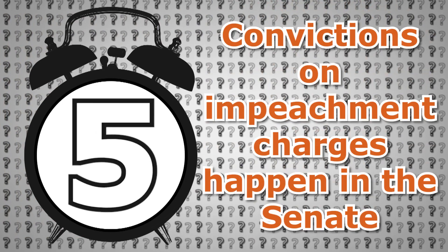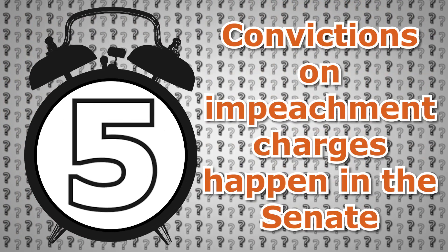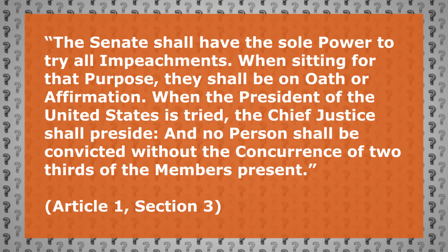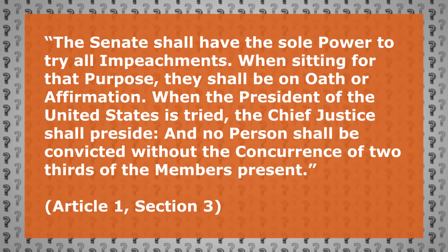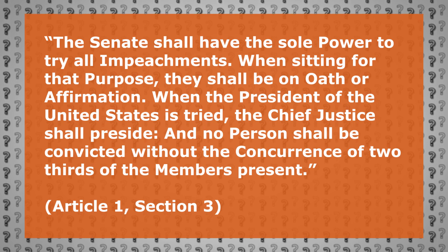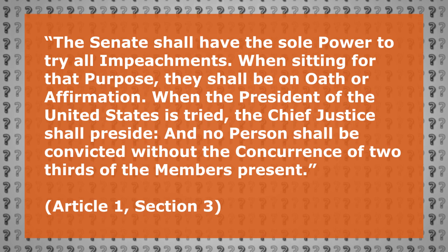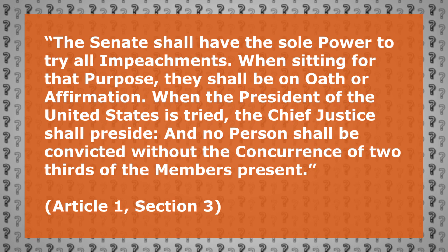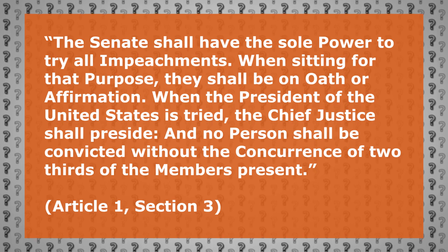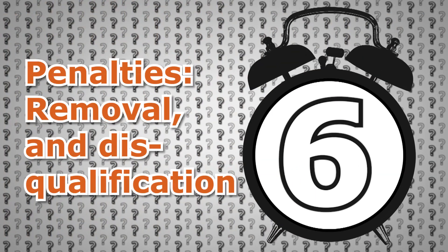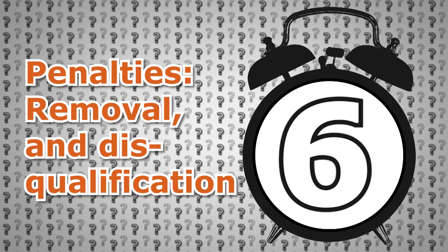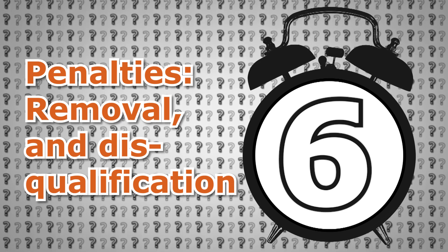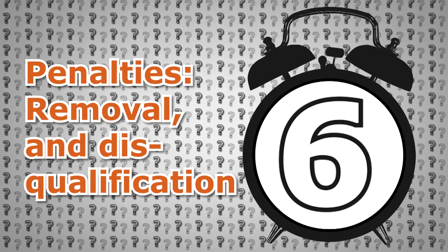Number five: convictions on impeachment charges happen in the Senate. As Article 1 Section 3 lays out, the Senate shall have the sole power to try all impeachments. When sitting for that purpose, they shall be on oath or affirmation. When the President of the United States is tried, the Chief Justice shall preside, and no person shall be convicted without the concurrence of two-thirds of the members present. And finally, number six: the consequences of impeachment convictions are limited to being removed and barred from office. Other penalties for the same misdeeds go through the normal judicial process.